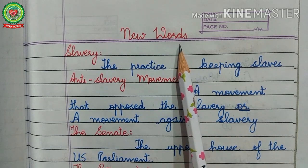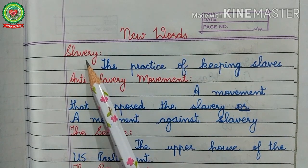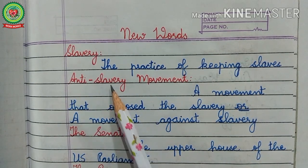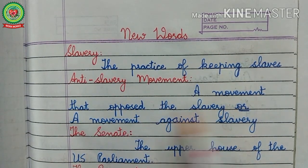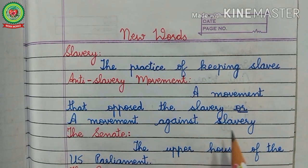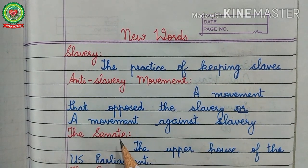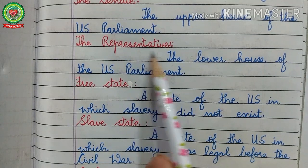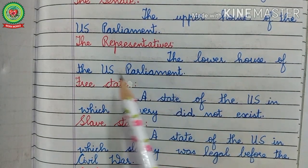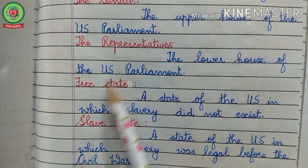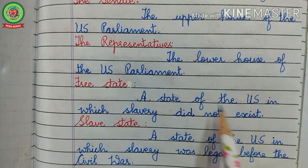Now let us discuss new words related to today's topic. First, slavery — the practice of keeping slaves. Anti-slavery movement — a movement that opposed slavery, or a movement against slavery. The Senate — the upper house of the U.S. Parliament. The Representatives — the lower house of the U.S. Parliament. US means United States. Free state — a state of the U.S.